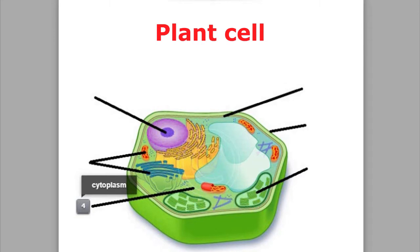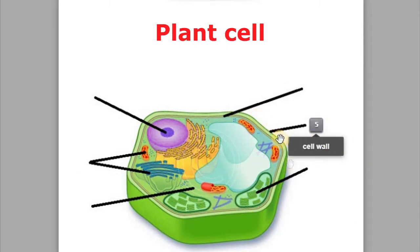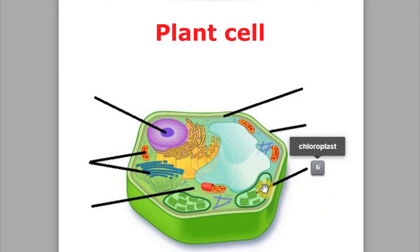But apart from that, there is a cell wall which surrounds the membrane and makes the plant cell more rigid and resistant. And they also have chloroplasts, which are specialized organelles used for the photosynthesis of plants. That's why there are chloroplasts in plants but not in animal cells.